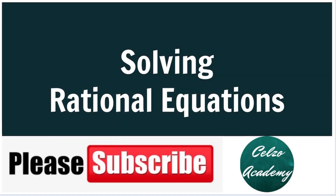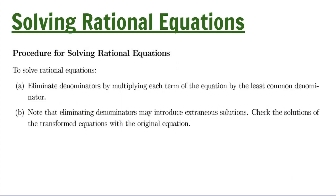Today we are learning how to solve rational equations. There are two key procedures: first, eliminate denominators by multiplying each term of the equation by the LCD, or least common denominator. Second, take note that eliminating denominators may introduce extraneous solutions, so you have to check the solutions of the transformed equation against the original equation.